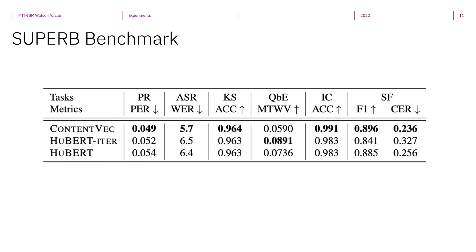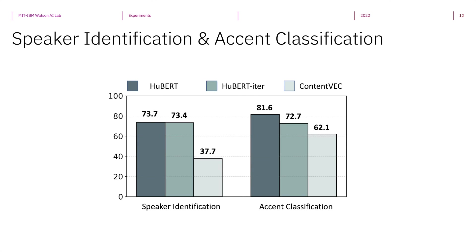We also evaluated ContentVec on a subset of SUPERB benchmark tasks labeled as content and semantics, and the results show consistent performance advantage over the baselines. On the contrary, on speaker identification and accent classification tasks, which do need speaker information, ContentVec performs the worst, which shows the success of its speaker disentanglement designs.